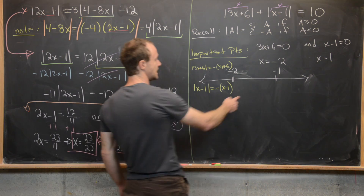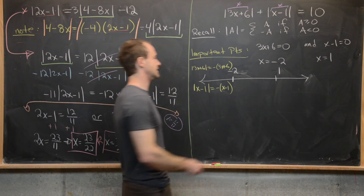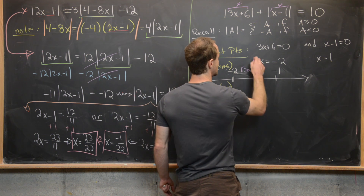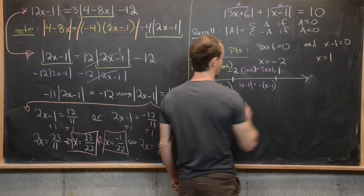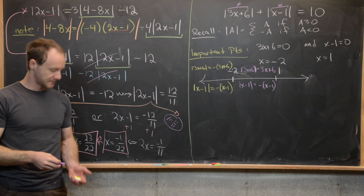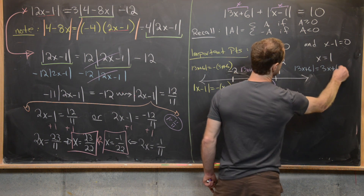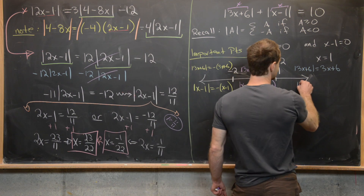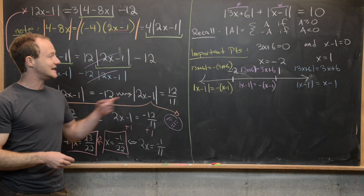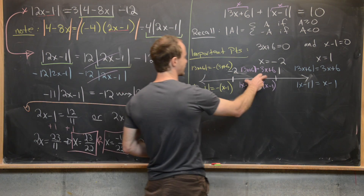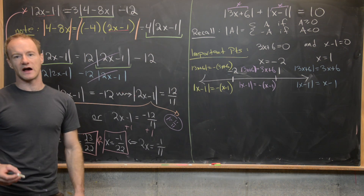Similarly, if you're between negative 2 and 1, then 3x plus 6 is positive, which means the absolute value of 3x plus 6 is just 3x plus 6. But the absolute value of x minus 1 is still negative (x minus 1) because x minus 1 is negative there. Finally, to the right of 1, the absolute value of 3x plus 6 equals 3x plus 6 and the absolute value of x minus 1 equals x minus 1, since both interiors are positive.